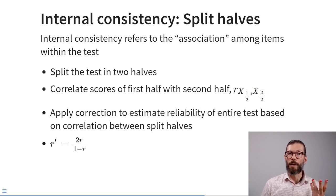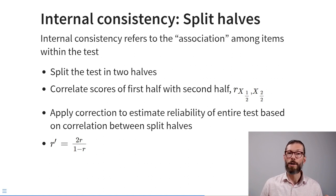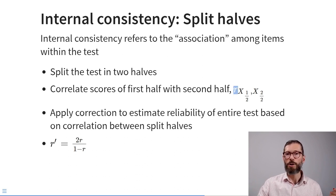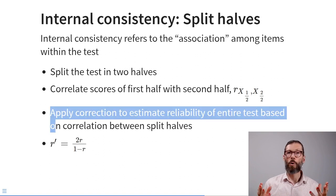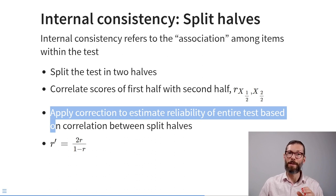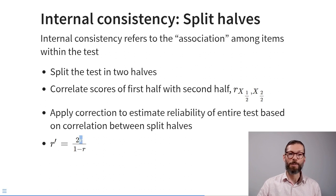We can also estimate reliability via internal consistency. One method is the split-halves approach: split the test into two halves and correlate the scores from the first half with those from the second half. Since this gives the correlation between two half-tests, a correction is applied: take the split-half correlation r, multiply by 2, and divide by 1 + r — giving the estimated split-halves reliability.